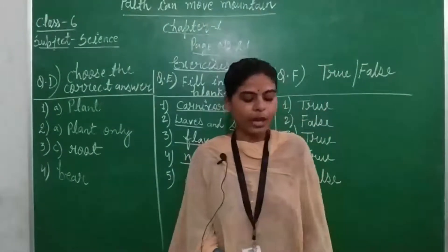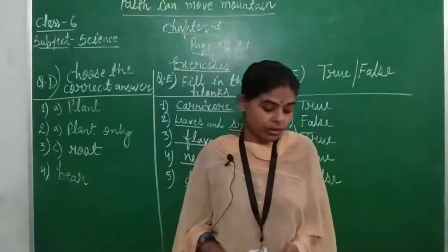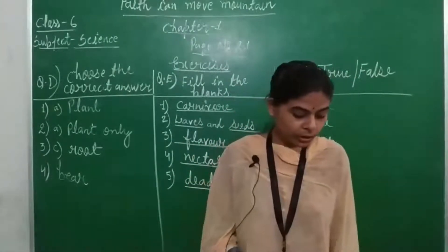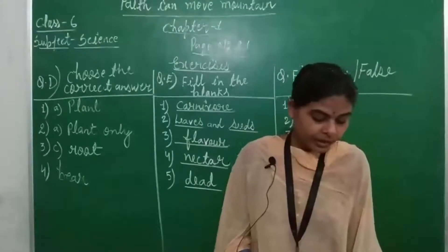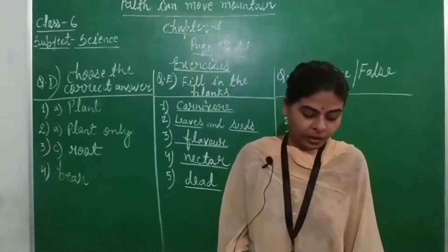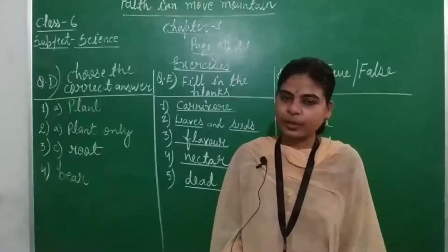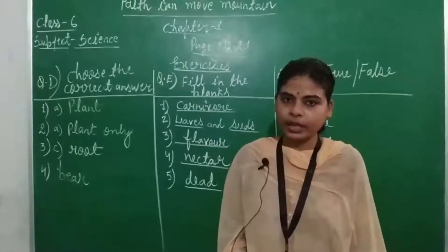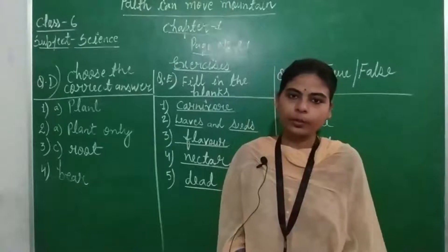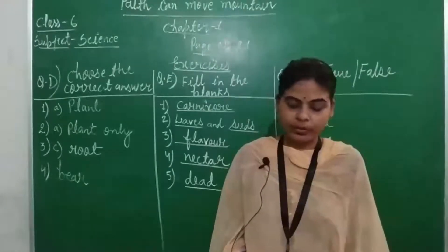Question number 4: an omnivore among the following is — cow, rabbit, or deer? Which one is an omnivore? Bear. Because it eats flesh and also honey from flowers and plants, so we classify it as an omnivore.